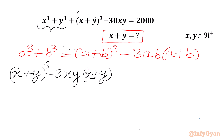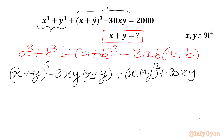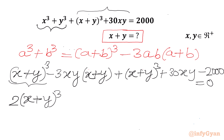Now we also have (x + y)³ + 30xy. So combining, we get (x + y)³ from the identity plus the existing (x + y)³. Let's move 2000 to the left-hand side, so minus 2000 equals 0. That gives us 2 times (x + y)³ minus 2000.